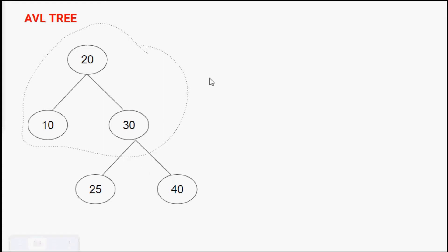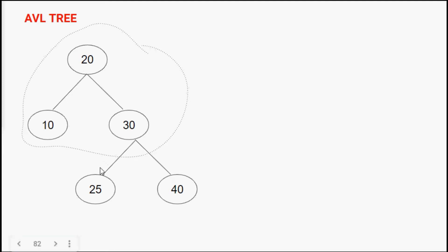We start with an existing AVL tree. The balance factor of leaf nodes 10, 25, and 40 are all 0. Node 30 has height of left subtree 1 and height of right subtree 1, so 1 minus 1 gives 0. Node 20 has height of left subtree 1 and height of right subtree 2, so 1 minus 2 gives minus 1. This is a balanced AVL tree.